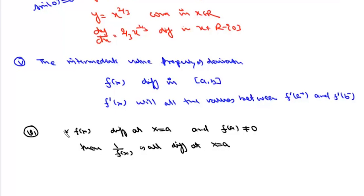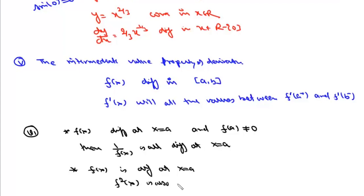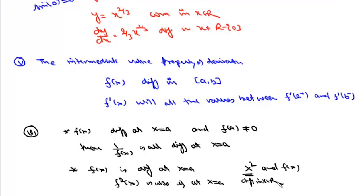We can work out many more results using the algebra of differentiability — for instance, if f(x) is differentiable at x = a, then f²(x) is differentiable at x = a as a composition of the differentiable function x² with f(x).